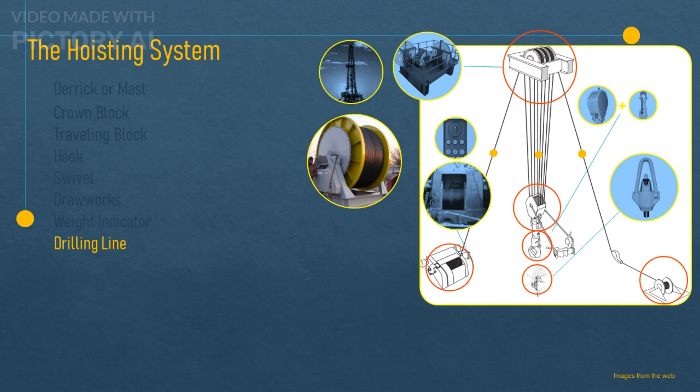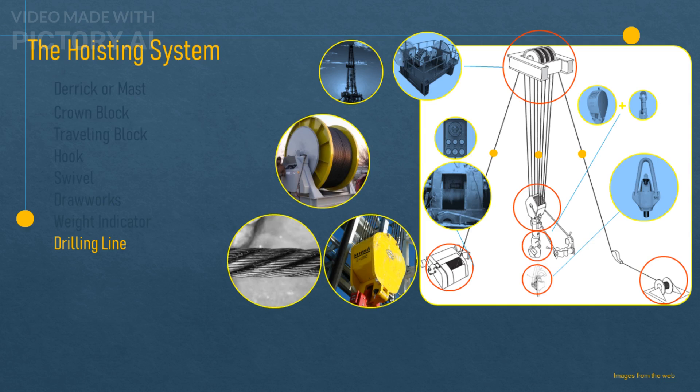The drilling line. This is a high strength steel cable that runs from the drawworks through the crown block and down to the traveling block several times. The more times the drilling line runs between the blocks, the more weight the hoisting assembly can handle, but at the expense of slower movement.